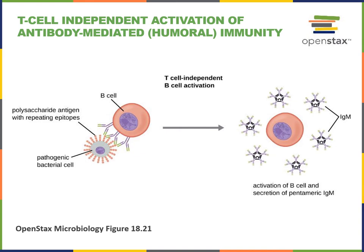IgM forms the B cell receptors on the surface of a B cell, but IgM also forms a secreted pentamer, meaning five antibody proteins are linked together. These pentamers are very efficient at binding to extracellular pathogens and causing them to clump together, which is known as agglutination. That clumping will help enable the immune system to clear the infection from the body.